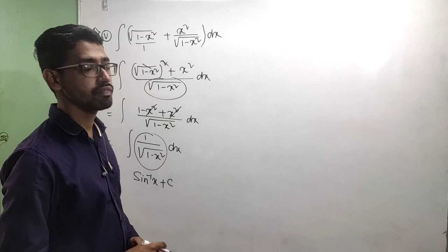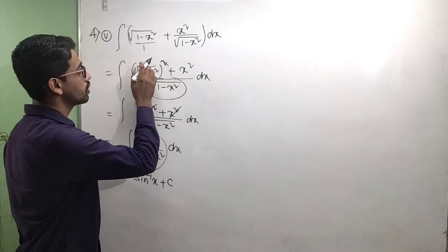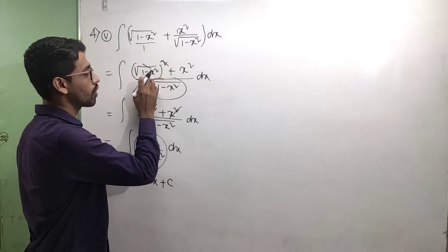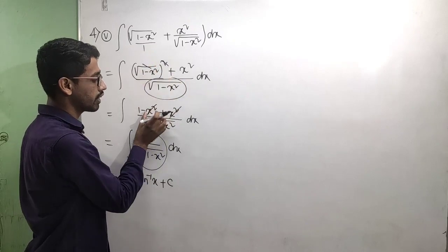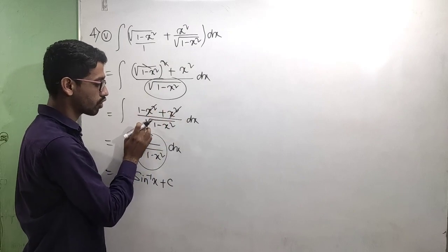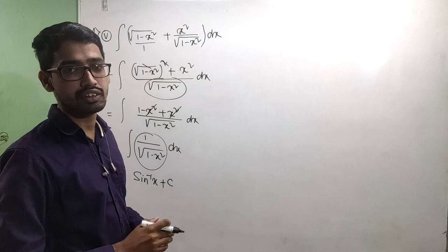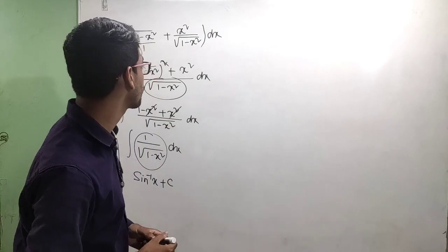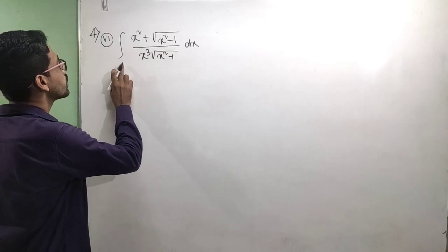Using LCM, root over square and root square cancel. We get one minus x square plus x square, and the next step gives one by root over of one minus x square. Integration dx gives sine inverse x plus C. Now let's solve the next question.